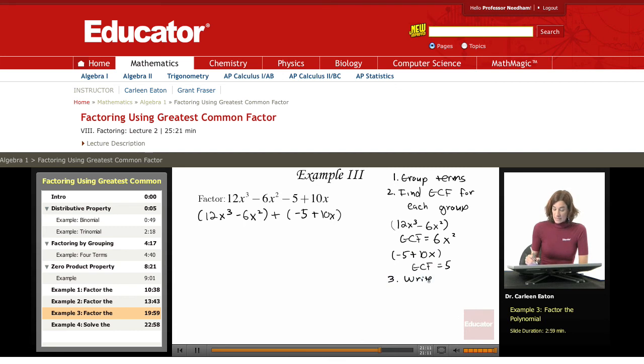write each group as a product of the greatest common factor and a simpler binomial. Okay, so for my first group, greatest common factor is 6x squared. If I take a 6x squared out of 12x cubed, I'm going to leave behind 2x. If I take a 6x squared out of 6x squared, I'm going to have a 1. It's not just 0 or nothing. You still have a 1 left behind,